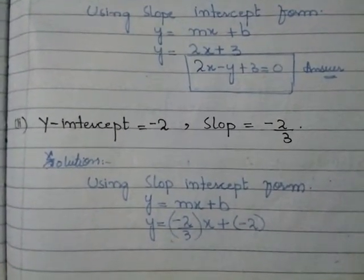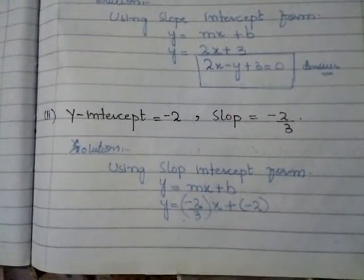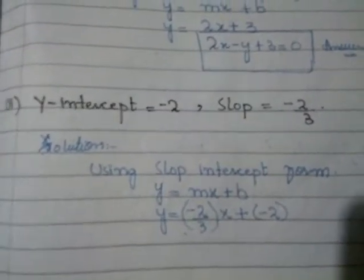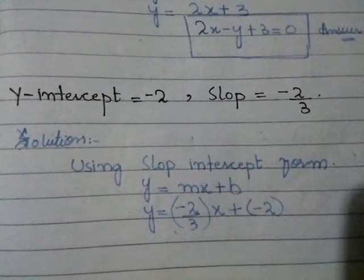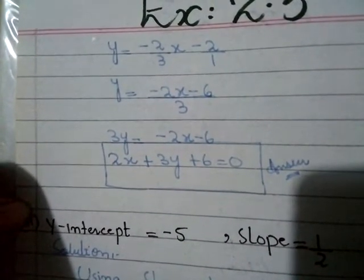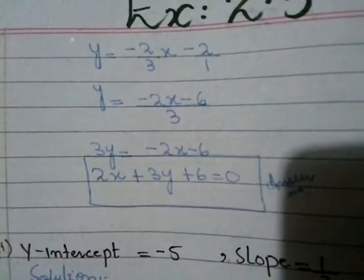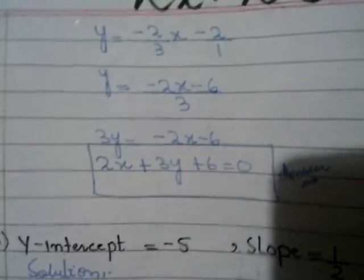Question number 2: y-intercept is equal to −2 and slope is equal to −2/3. Solution: using slope-intercept form, y = Mx + B. y = (−2/3)x + (−2). Now we take LCM: y = (−2x − 2)/1, giving y = (−2x − 6)/3.